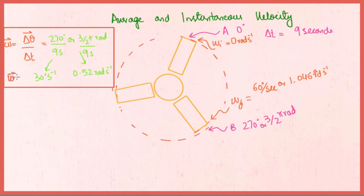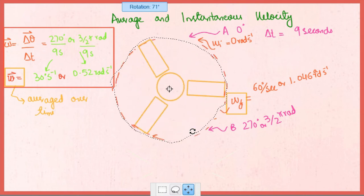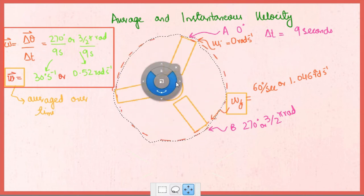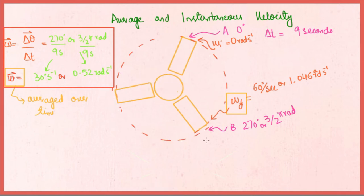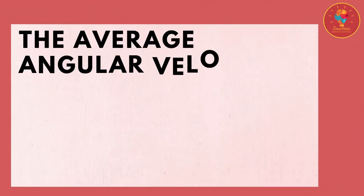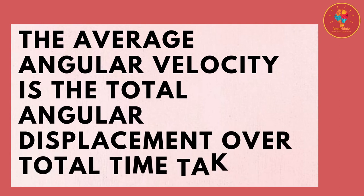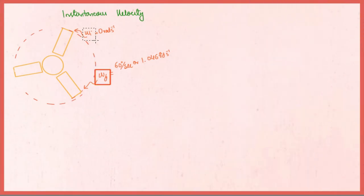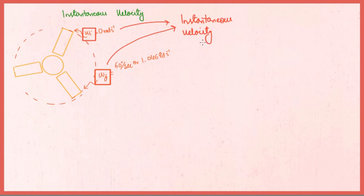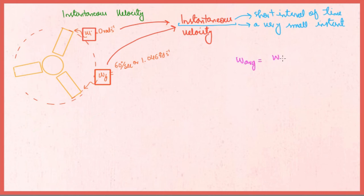Now, why isn't the final omega equal to this omega? It's because this omega is averaged over time, meaning the fan does not have this velocity throughout, but averaged over the time span of 9 seconds between points A and B. This is average angular velocity, defined as the total angular displacement over total time taken. The final omega and initial omega are the angular velocities at the final and initial instances — 1.046 radians per second and 0 radians per second respectively. These are instantaneous velocities.